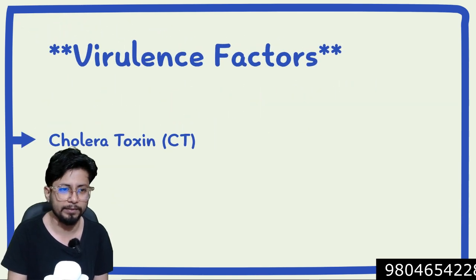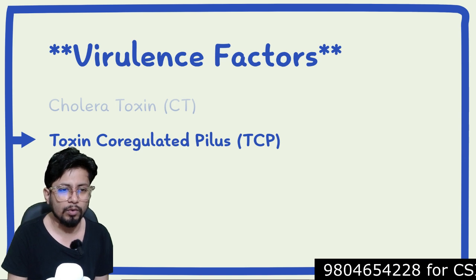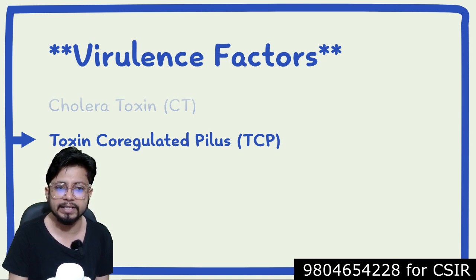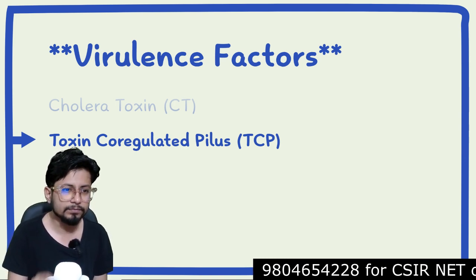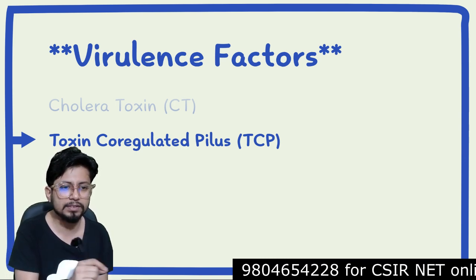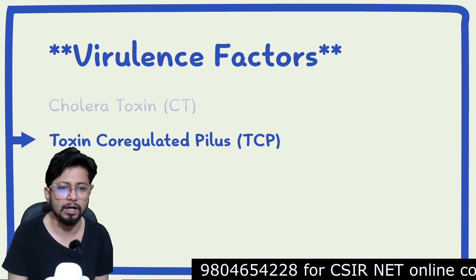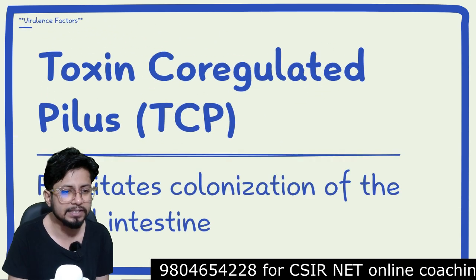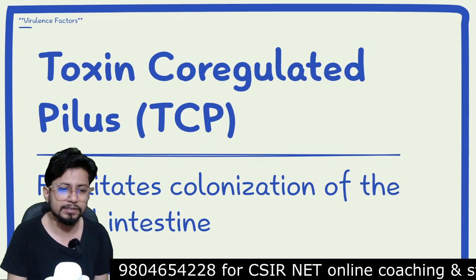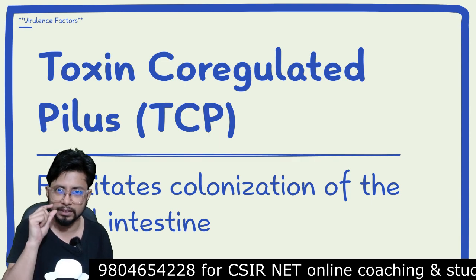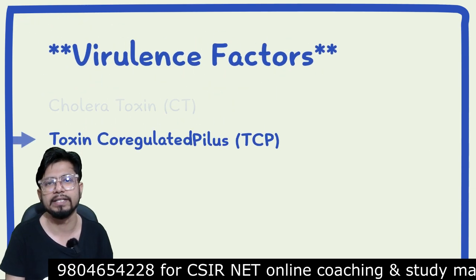The next virulence factor is toxin co-regulated pilus, or TCP. TCP facilitates the colonization of the cholera bacteria in our small intestine.